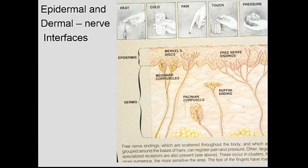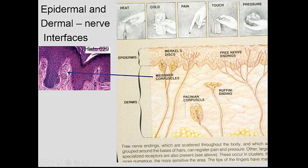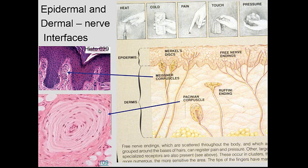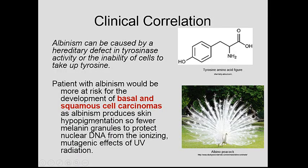When the epidermis and dermis are together, you have different senses: heat, cold, pain, touch, and pressure. Nerve endings associated with these include the Meissner's corpuscle in the dermal papillae for light touch, and the Pacinian corpuscle deep in the hypodermis for deep pressure.